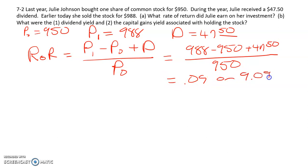Part B asks you for the capital gains yield and the dividend yield. So capital gains yield is just this portion of the equation. We'll abbreviate CGY. So that's going to be P1 minus P0 divided by P0.